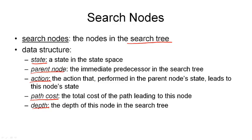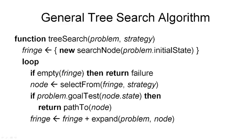So these are the five components that make up a search node: the state, the parent node, the action, the path cost, and the depth. Now we get to the first algorithm in this course: the general tree search algorithm. It is implemented as a function tree search that takes a search problem and a search strategy as input. The search problem consists of four components: the initial state, the successor function, the goal, and the path cost function.